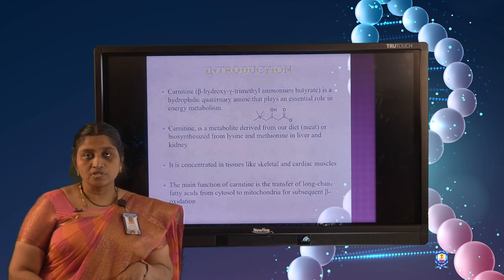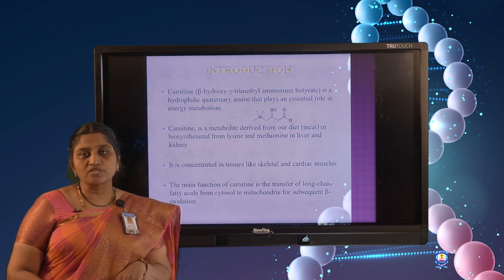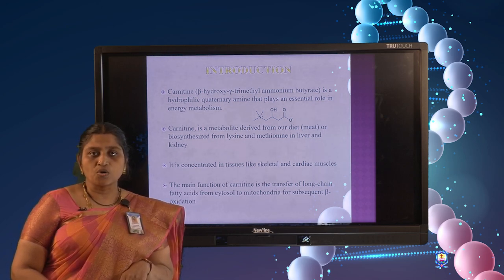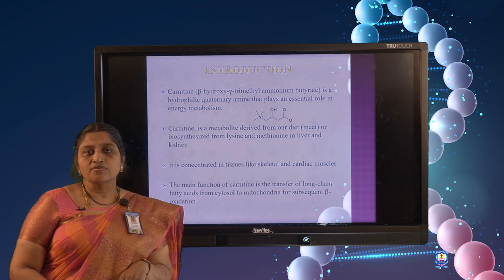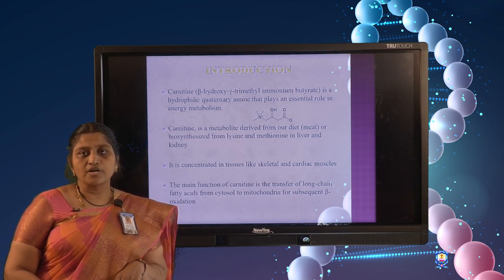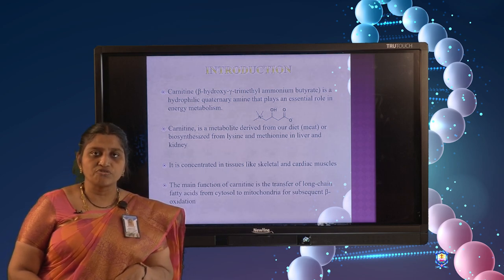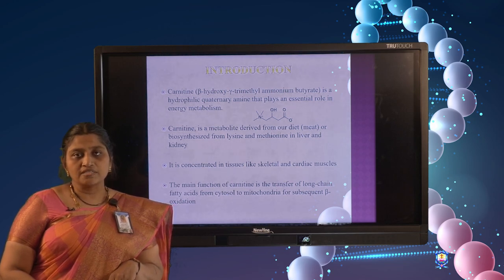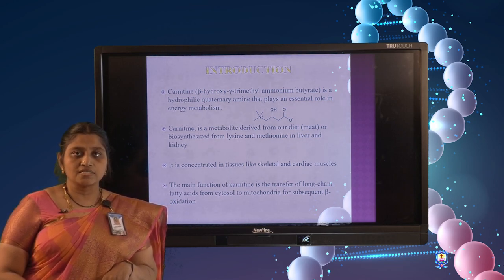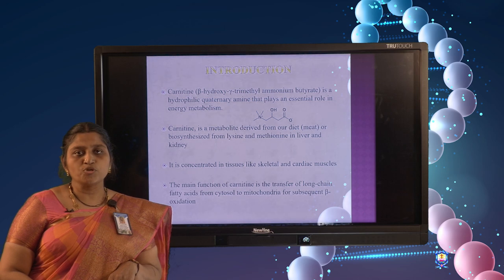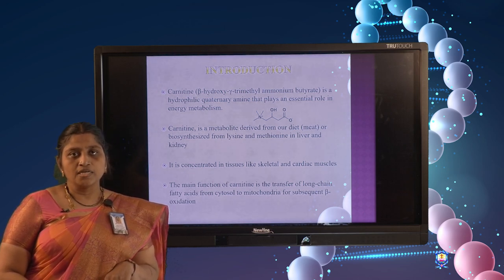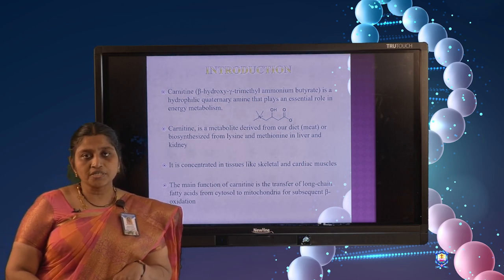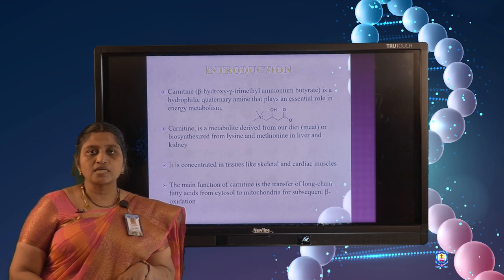Carnitine is a protein whose chemical name is beta-hydroxy trimethylammonium butyrate. It is required for the transport of long chain fatty acids from the cytosol into the mitochondrial matrix. Carnitine is provided by the diet or synthesized in the cells from amino acids lysine and methionine in the liver and kidney, and is concentrated in tissues like skeletal and cardiac muscles.